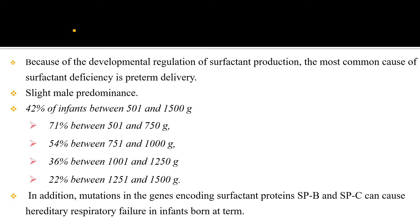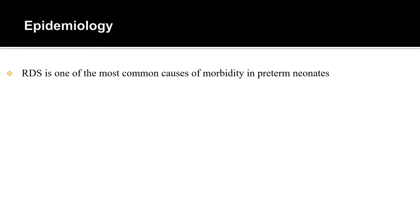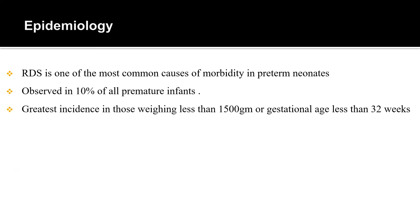In addition, mutations in genes including surfactant protein B and surfactant protein C can cause hereditary respiratory failure. Respiratory distress syndrome is one of the most common causes of morbidity in preterm neonates and is observed in around 10% of all premature infants. The greatest incidence is in those weighing less than 1,500 grams or gestational age less than 32 weeks.